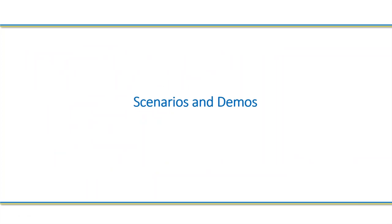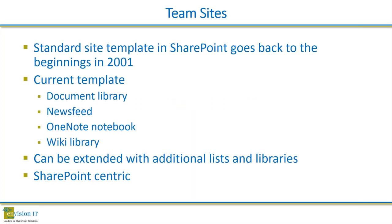So that's some background on project management and Office 365. Let's dive into the meat of the session — this is where we're going to spend the bulk of the time. We're going to take you through an evolution of what we've done from a project management point of view and the tools we've put together. Let's start at the beginning with Team Sites. This is actually the genesis for SharePoint itself — way back in 2001 with SharePoint Portal Server 2001 or SharePoint Team Services, it was all about building Team Sites. In the current template, either in SharePoint 2013 or Office 365, what we have out of the box is a document library, a news feed, a OneNote notebook, and a wiki library. We can certainly extend that and add additional lists and libraries, but it is very SharePoint-centric — it doesn't include any Exchange features, Yammer, or anything else.